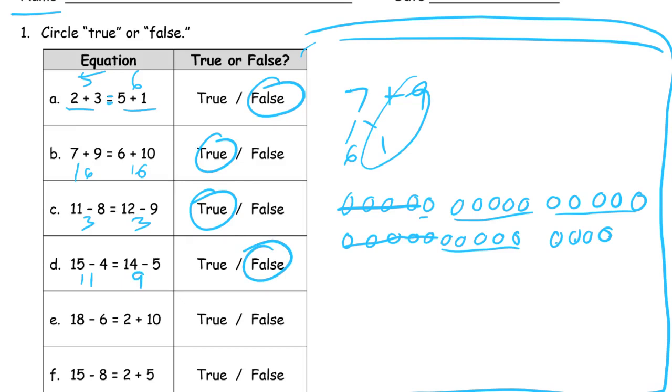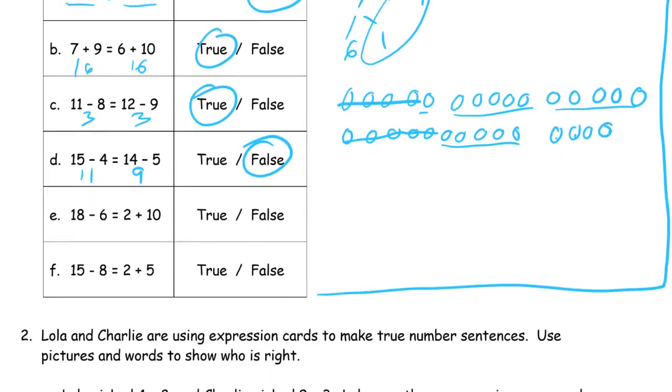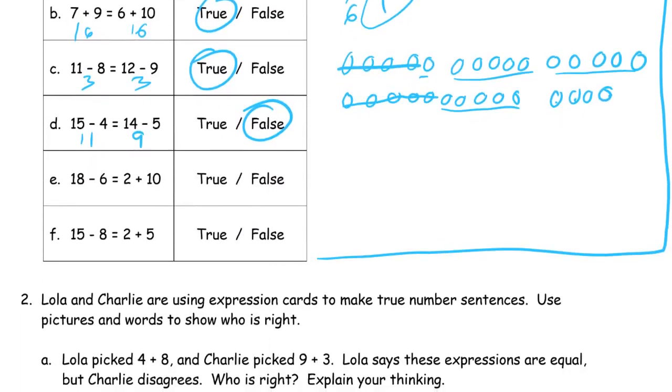18-6, you could do this, 1, 2, 3, 4, 5, 6, 7, 8, 9, 10, 11, 12, 13, 14, 15, 16, 17, 18. This would be a lot easier to do using number bonds.